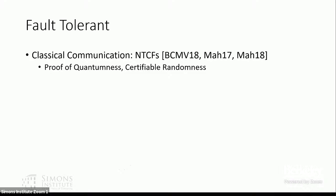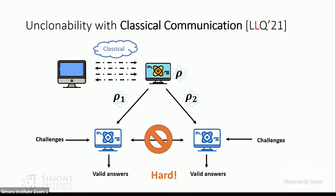To achieve fault tolerance we use a different method based on noisy trapdoor claw-free functions (NTCFs), which are also used for proof of quantumness and certifiable randomness. We prove that based on NTCFs there is an unclonability result with only classical communication: the challenger makes only classical interactions with the player, and at the end of the game the player holds some unknown but unclonable state. The player cannot copy the state into two parts that, without communicating, can both produce valid answers to the same random challenges.